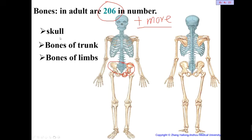All the bones, according to their location, are divided into the skull, the bones of the trunk, and the bones of the limbs — including the bones of the upper limb and the bones of the lower limb.